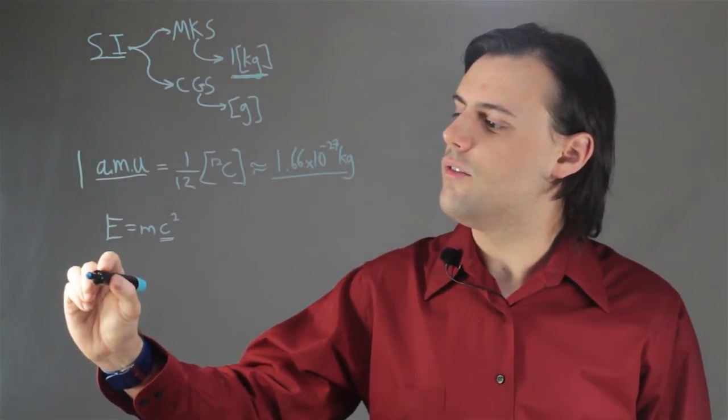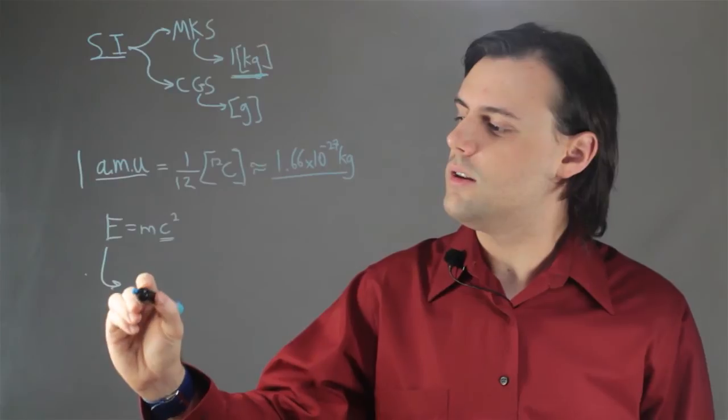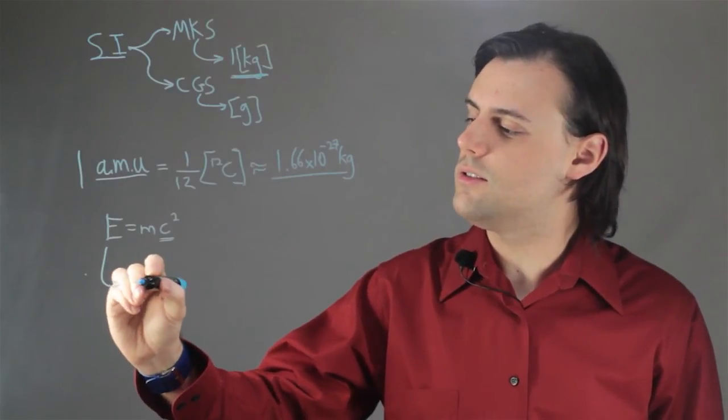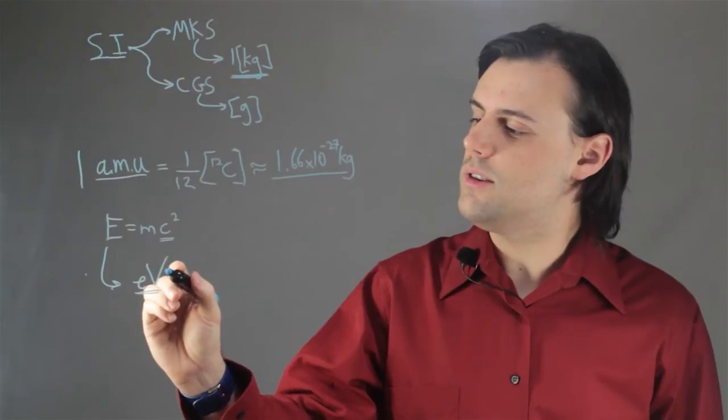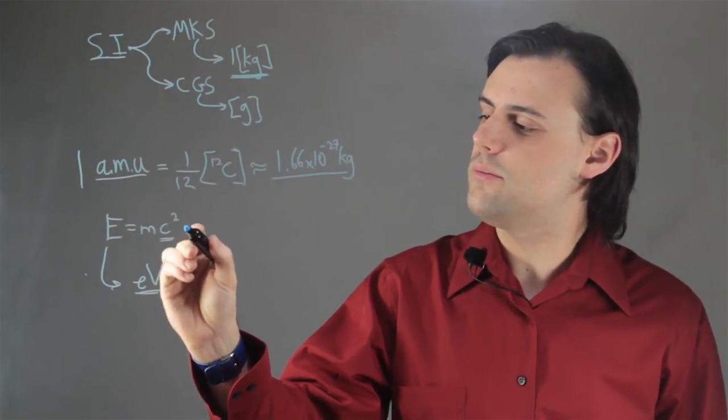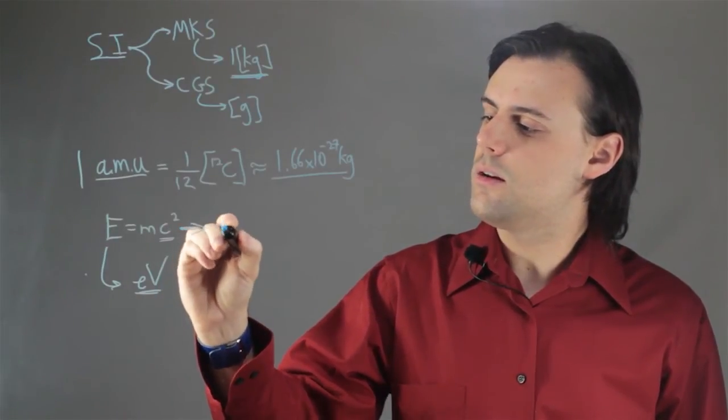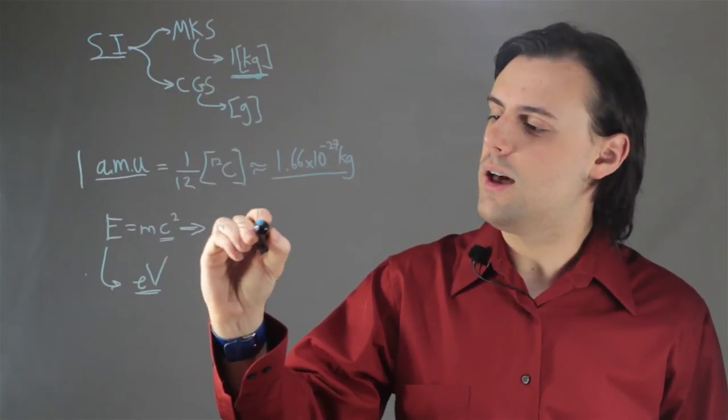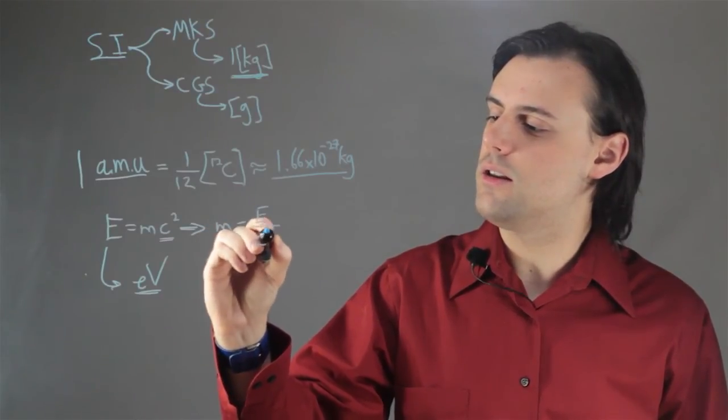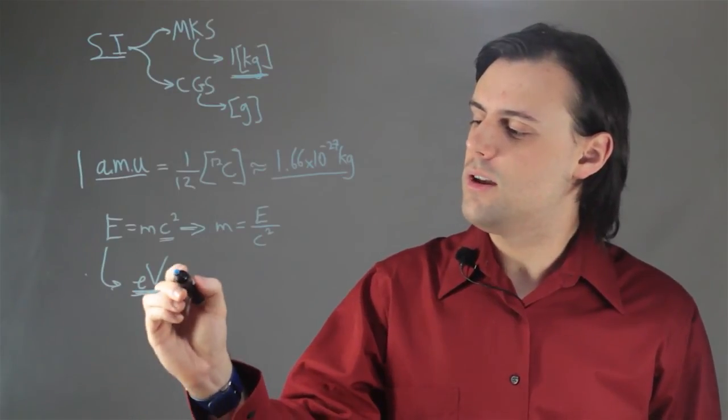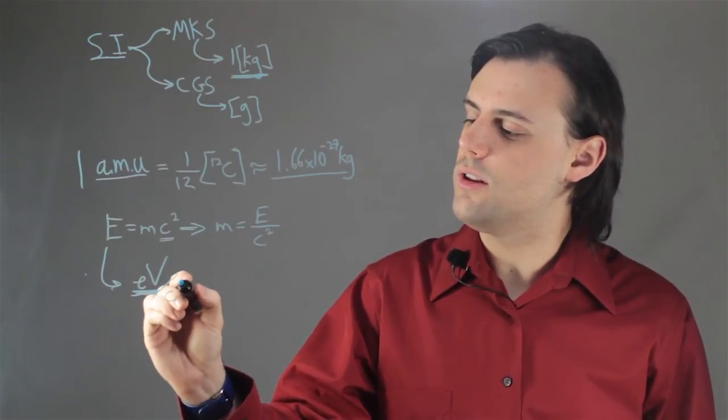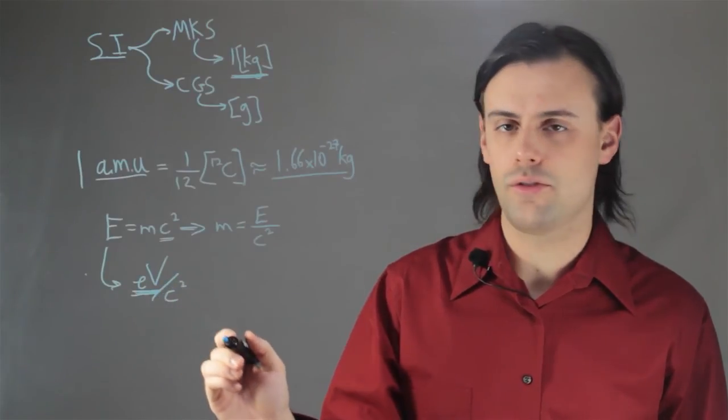the standard unit of energy in subatomic physics is the electron volt. And we see this because mass can be written as the energy divided by the speed of light squared. So this electron volt mass, it's understood that we're dividing by the speed of light squared.